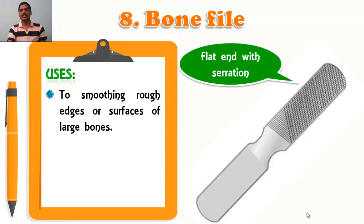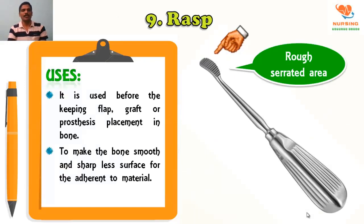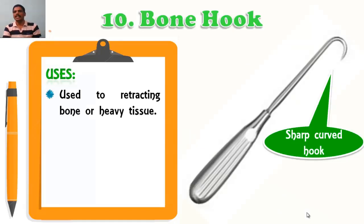Bone file is used for smoothening the rough edges or surface of the large bone. The flat end with serrations you can see on the blade. Rasp is used before placing a plate, graft, or prosthetic in the bones to make the bone surface smooth and sharp-free for adherence to other materials. The rough serrated area you can see on the blade.